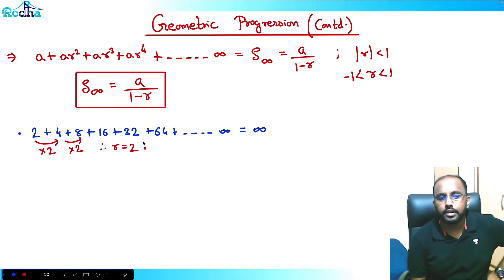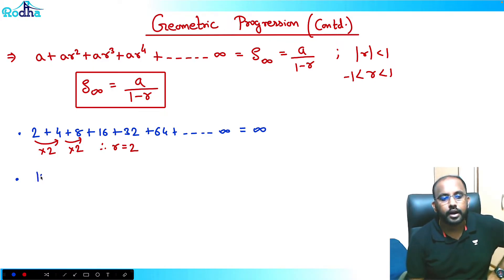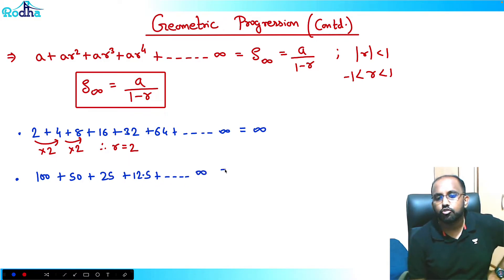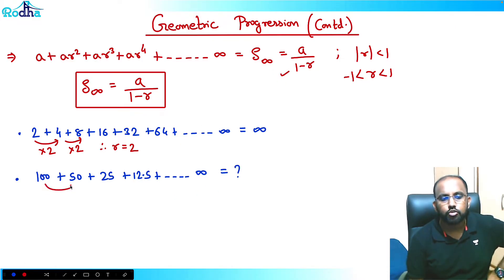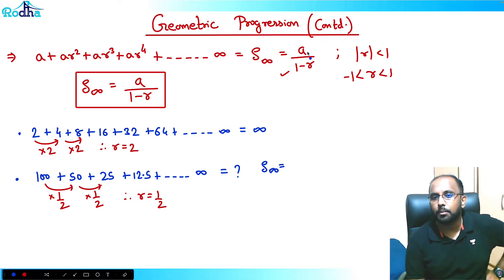This formula is applicable when the series is closing or reducing. For example, if we have a series like 100 + 50 + 25 + 12.5 and it goes on till infinity, the formula will be applicable here because r is 1/2 — every time half is being multiplied. So r = 1/2 and we can use S∞ = a / (1 - r).